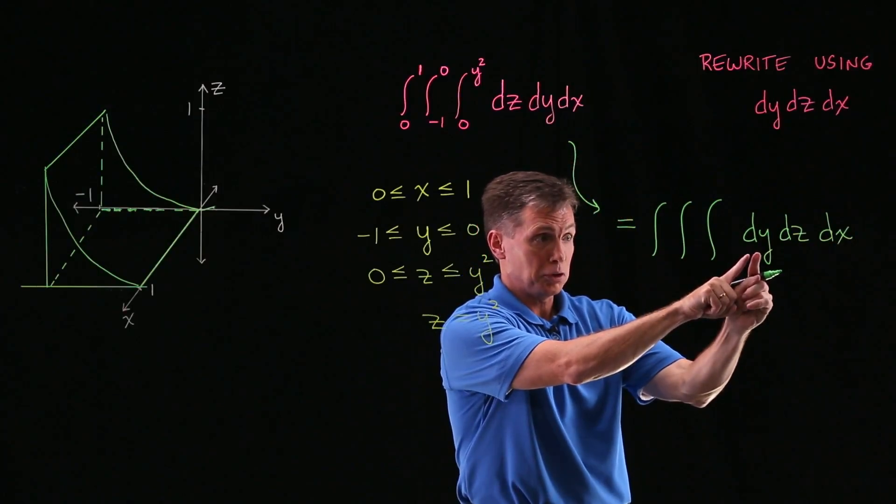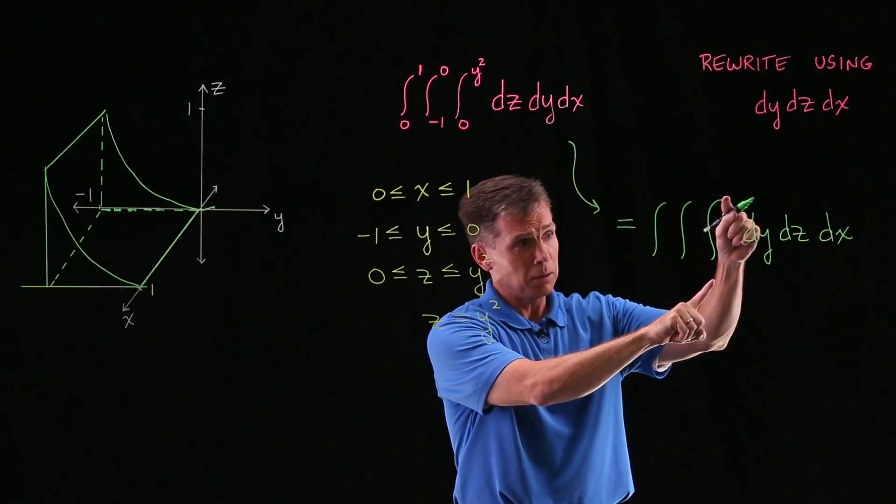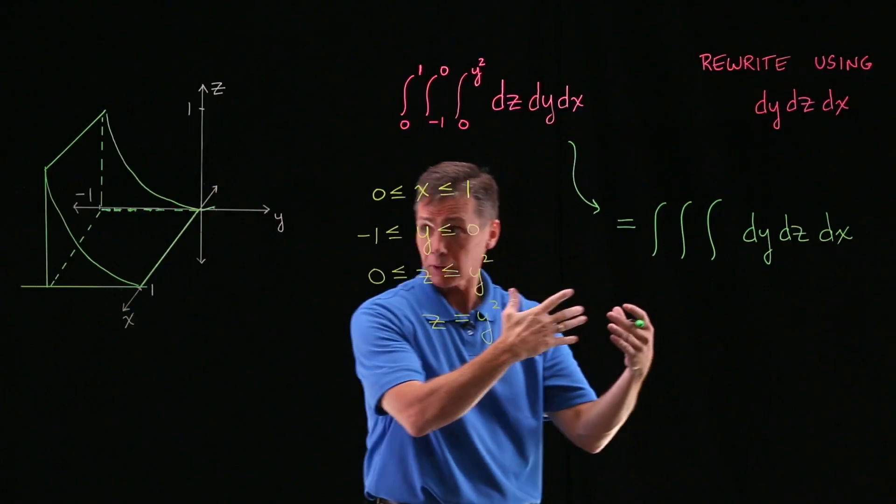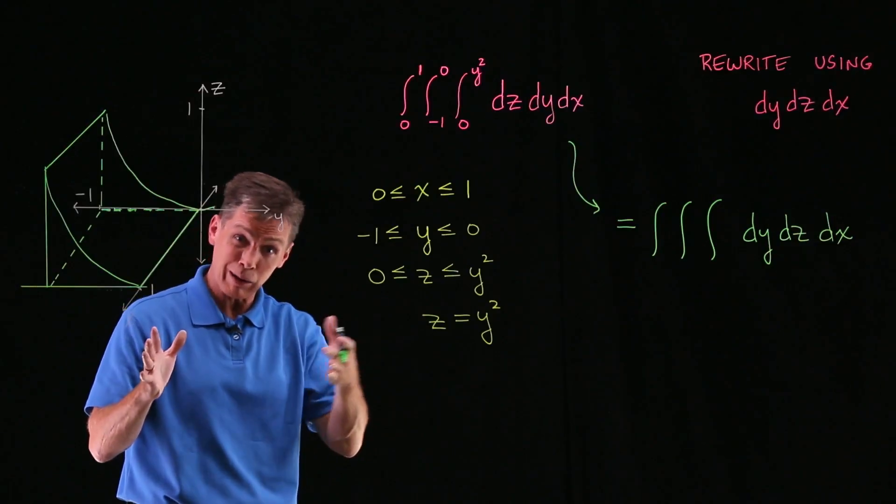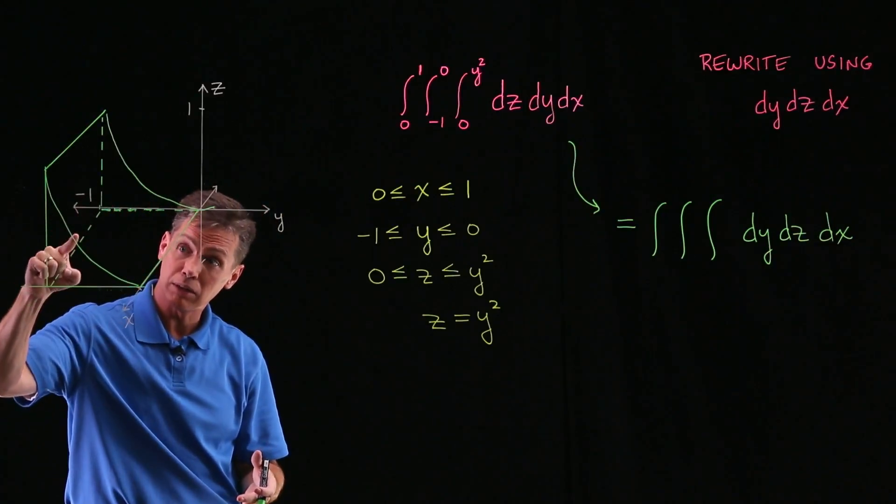My y variable's first. So this inner integration symbol, I want to put limits of integration on it, and I've got to think about the y variable. Let's go back to the drawing. And if you look at your y variable, what you're thinking is how low does it go? How high does it go? How low is as far to the left as that negative 1.